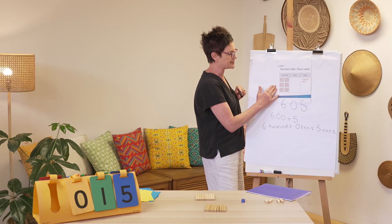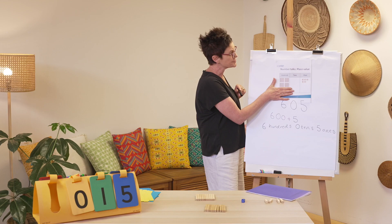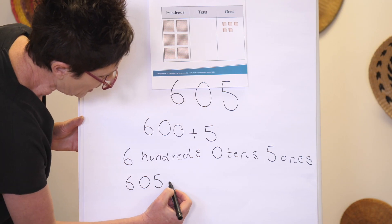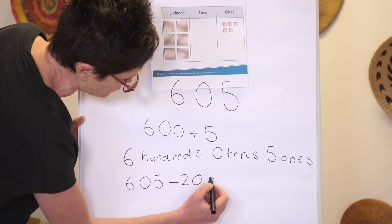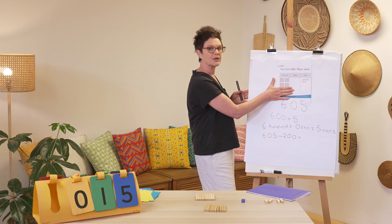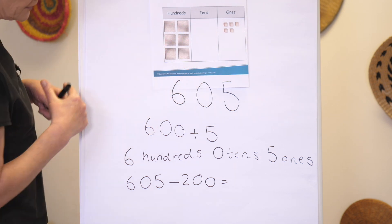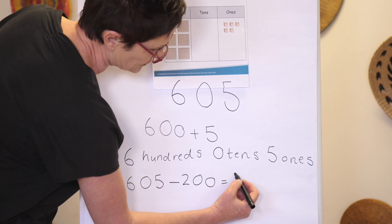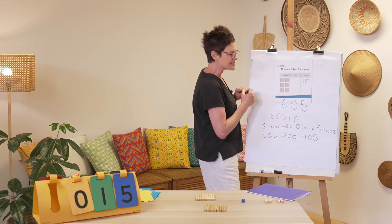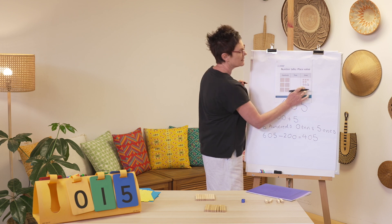What if I change this number and take out two hundreds? Six hundred and five take away two hundred — who's got an answer? Yes, four hundred. We have four hundred and five. Six hundred and five take away two hundred is four hundred and five.